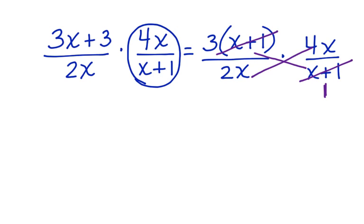2x and 4x, we can cancel the 2x, leaves us with 1, goes into 4x 2 times.